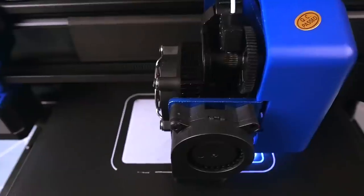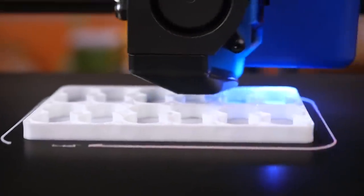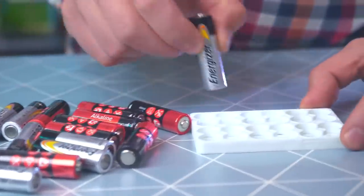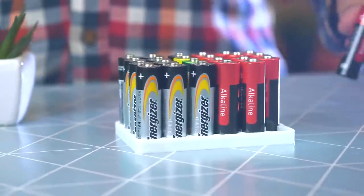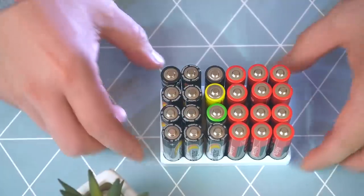After that we print out one more useful thing. It's a stand holder for general AA batteries. I mean, there are usually lying around everywhere. And in this holder it is neatly lined up and takes up less space.